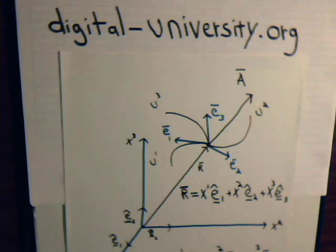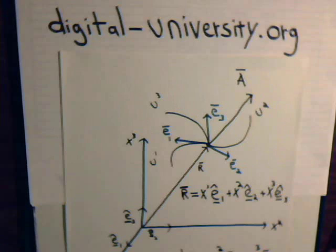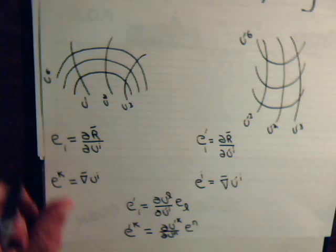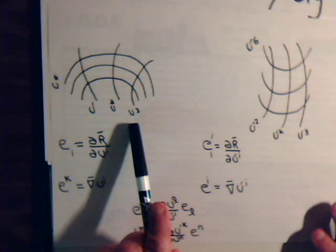Let's briefly review. Remember in the past videos when we had a curvilinear coordinate system with curvilinear axes u1, u2, and u3, and there's a certain point in space located with those axes. We could also locate that point with a position vector on a Cartesian coordinate system. Here we are going to display just two general curvilinear coordinate systems.